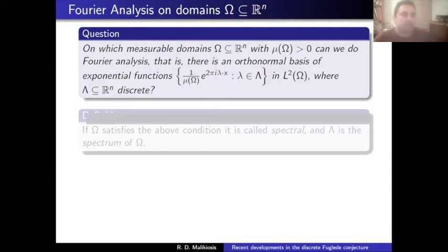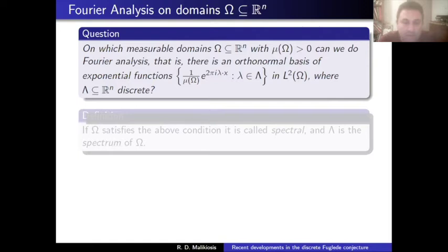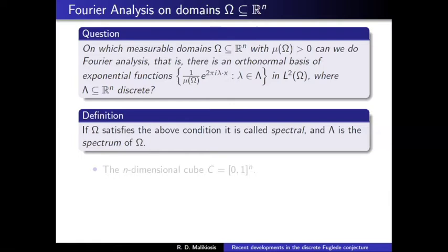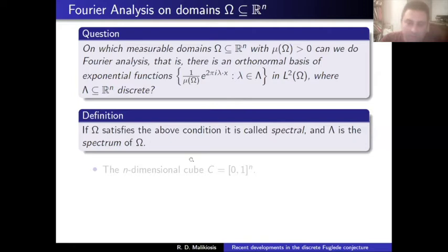The basic question in Euclidean spaces is: you have a domain, and you ask whether you can do some Fourier analysis on it — in other words, expressing a square-integrable function on a bounded measurable domain as a series of orthogonal exponentials. We want this to be an orthonormal basis of complex exponential functions of the form (1/|Ω|)^(1/2) · e^(2πi⟨λ,x⟩). The λ appearing here form the so-called spectrum, a discrete set of R^n. If Ω satisfies these conditions, λ is called the spectrum of Ω.